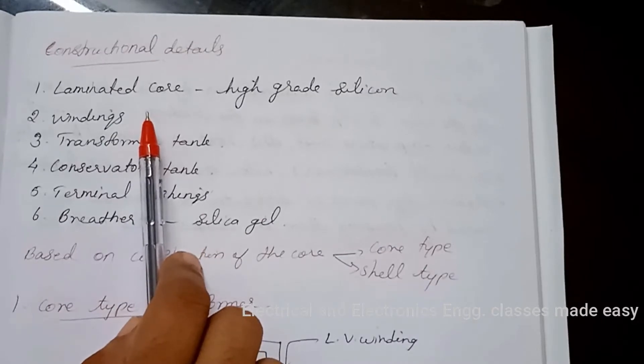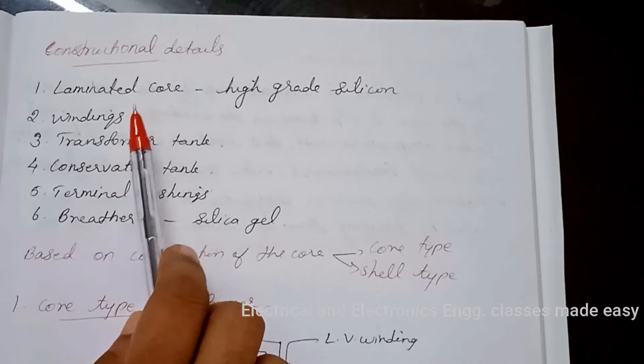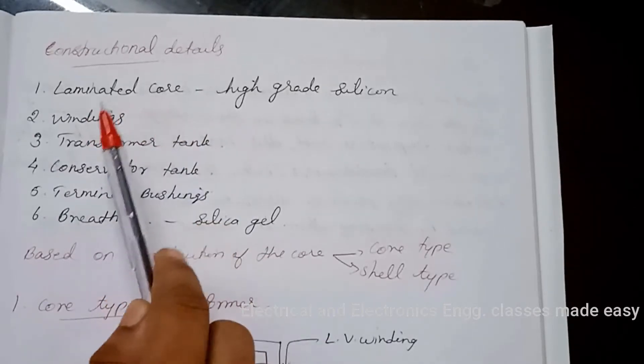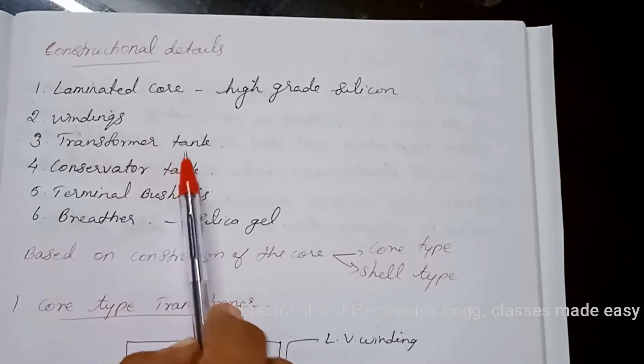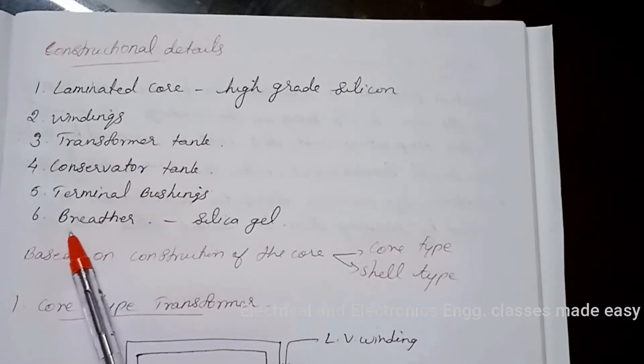Let us go through the constructional details of a transformer. The main parts of a transformer are laminated core, windings, transformer tank, conservator tank, terminal bushings, breather.